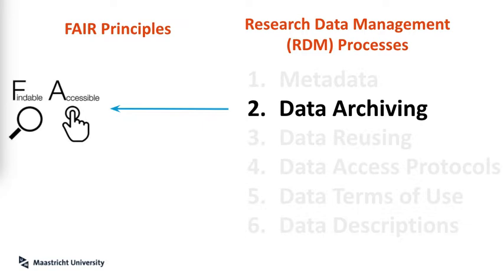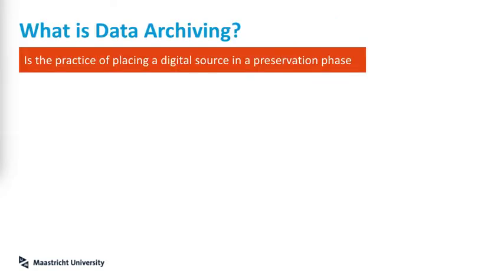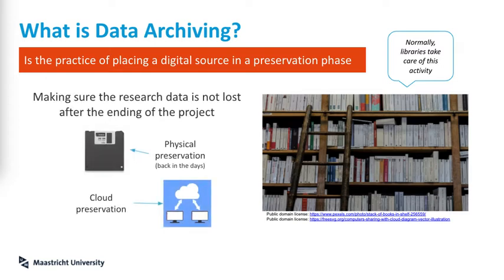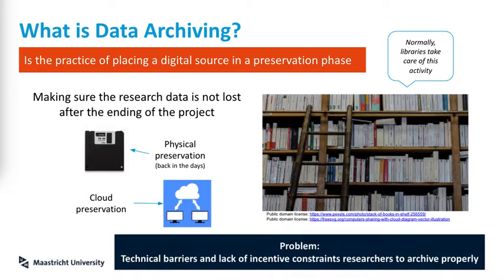The next one is data archiving, which has to do with findable and accessible principles. So what is data archiving? Data archiving is the practice of placing a digital source in a preservation phase. Normally, libraries take care of this activity. Generally speaking, we want to make sure that the data is not lost when the project ends — like physical preservation on floppy disks back in the days, or cloud preservation. The problem is technical barriers and the lack of incentives that constrain researchers to archive properly.